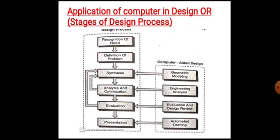Step 3 is synthesis. Synthesis is the process of contributing a shape or a method of accomplishing a given purpose. It is the process of selecting the mechanism of the system, material, size, and shapes of components so as to get the desired output with the given input. It involves a number of iterations. In computer-aided design, geometric modeling is used to assist the synthesis.